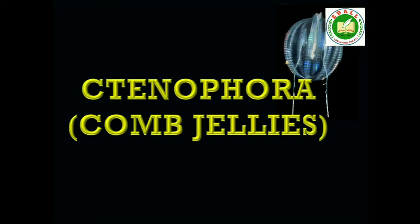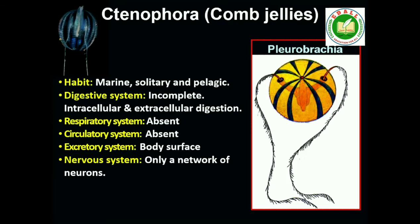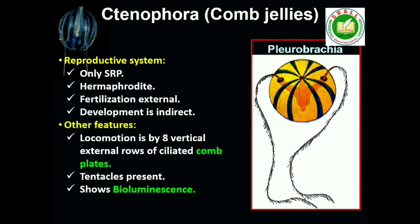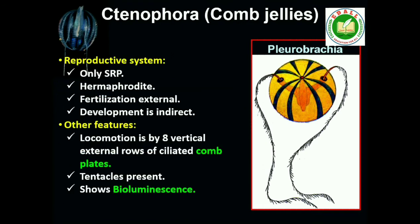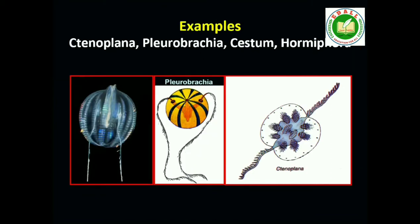Third is Phylum Ctenophora. Ctenophores, commonly known as sea walnuts or comb jellies, are exclusively marine, radially symmetrical, diploblastic organisms with tissue level of organization. The body bears eight external rows of ciliated comb plates, which help in locomotion. Digestion is both extracellular and intracellular. Bioluminescence, the property of a living organism to emit light, is well marked in ctenophores. Sexes are not separate. Reproduction takes place only by sexual means. Fertilization is external with indirect development.